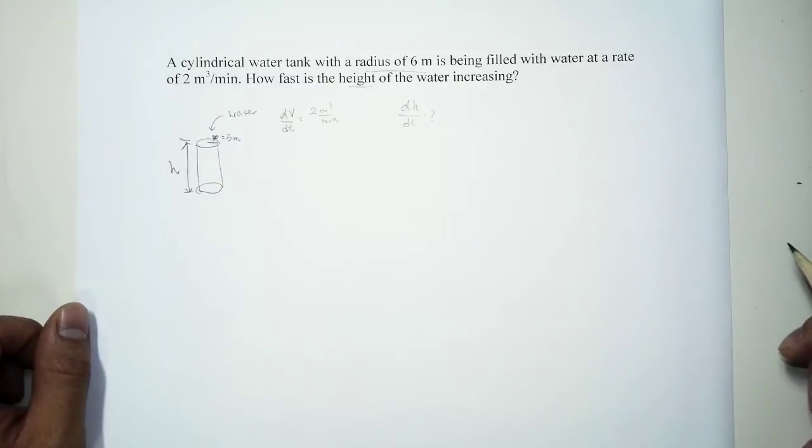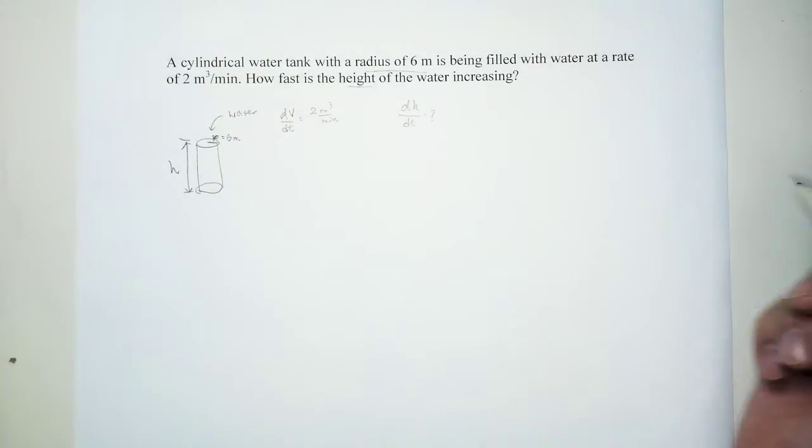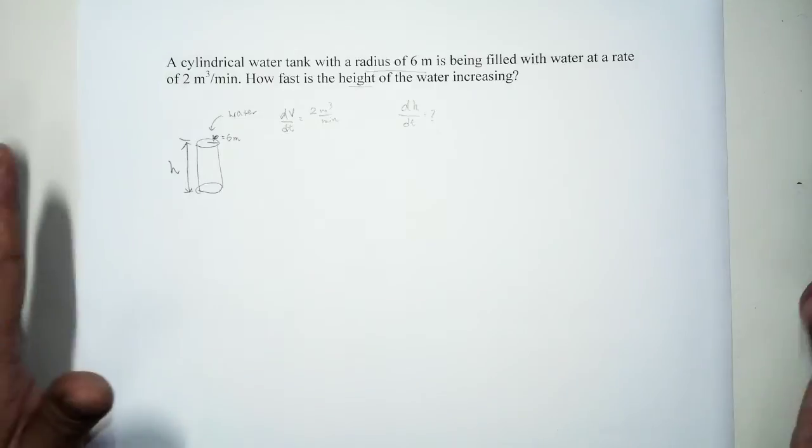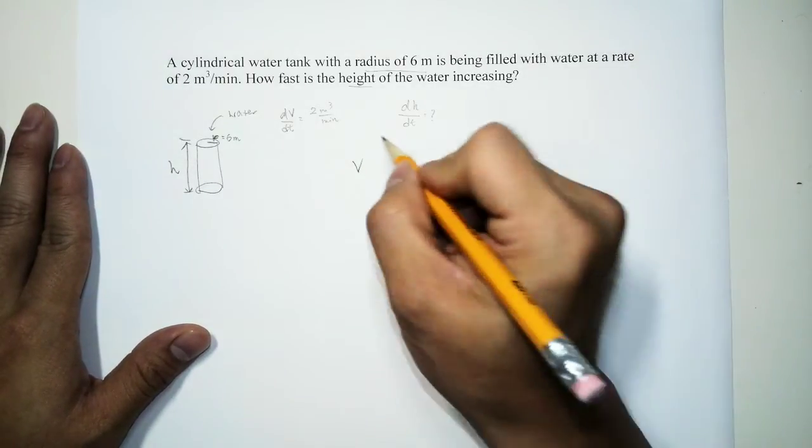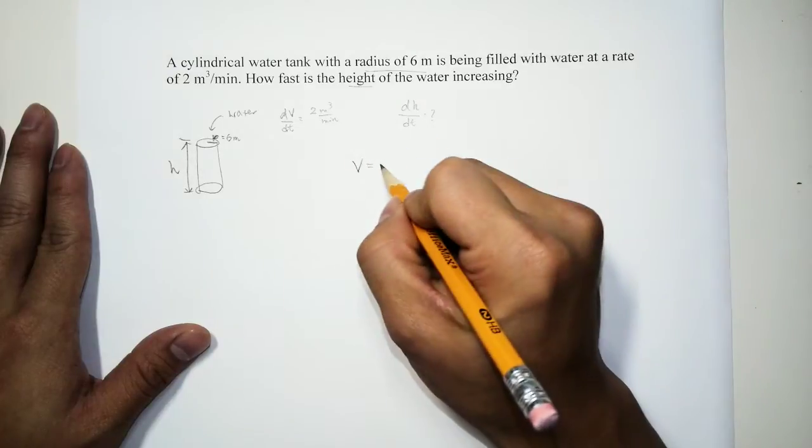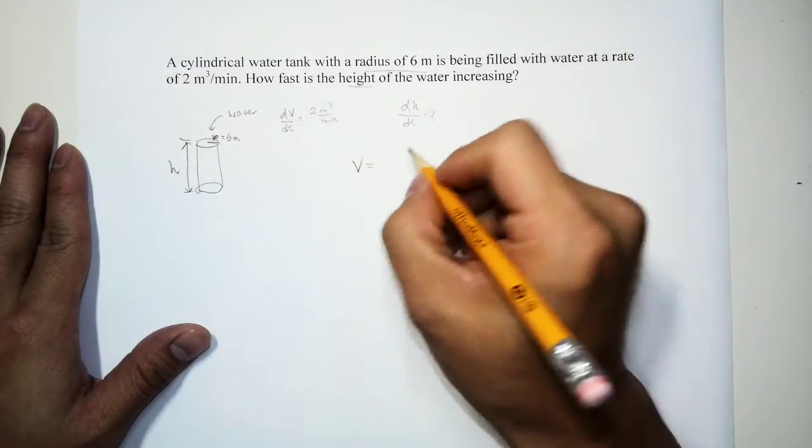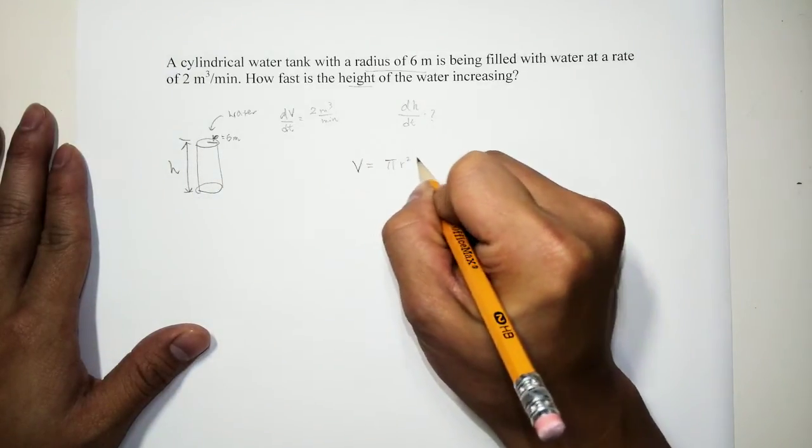Now what we have here is we have a cylinder and we're talking about the volume and the volume is related to radius and h. So let's go ahead and write down an equation for the volume of a cylinder, so V is equal to the area times height, so we have π r² times h.